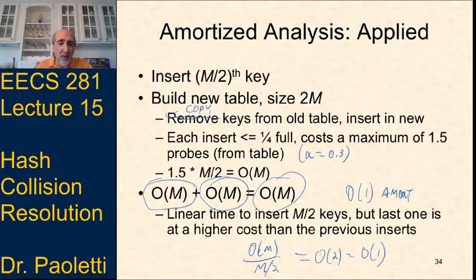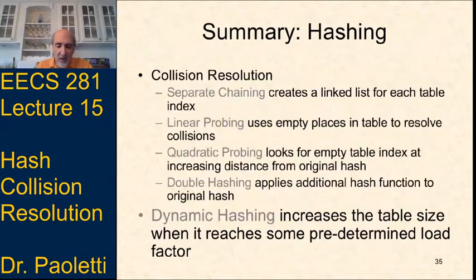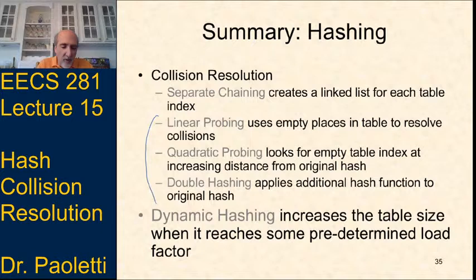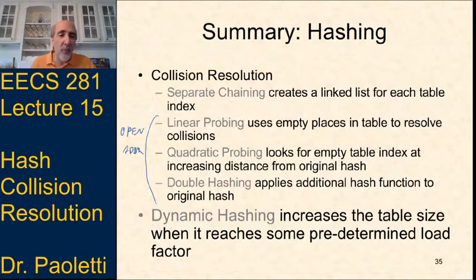So the amortized cost is O(1). One insertion is expensive when we have to grow, but most are cheap. All open addressing methods — linear probing, quadratic probing, double hashing — can use dynamic hashing to increase the table size when we hit a certain load factor. That's it for the slides; now let's look at a code example in Visual Studio.